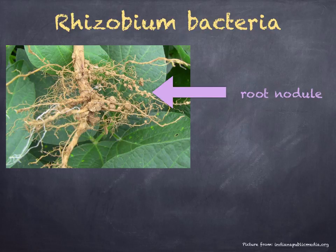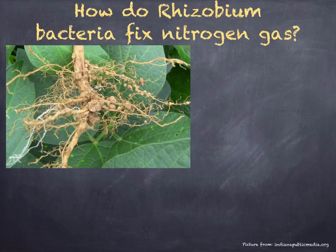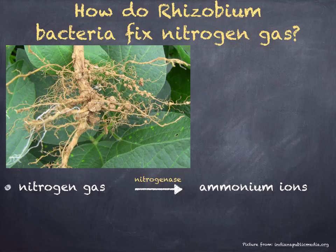The plant and bacteria coexist with both benefiting from this relationship — we call this mutualism. Mutualism is when two organisms of different species live very closely together, each meeting the other's needs. The bacteria use an enzyme called nitrogenase, which catalyzes the conversion of nitrogen gas into ammonium ions.